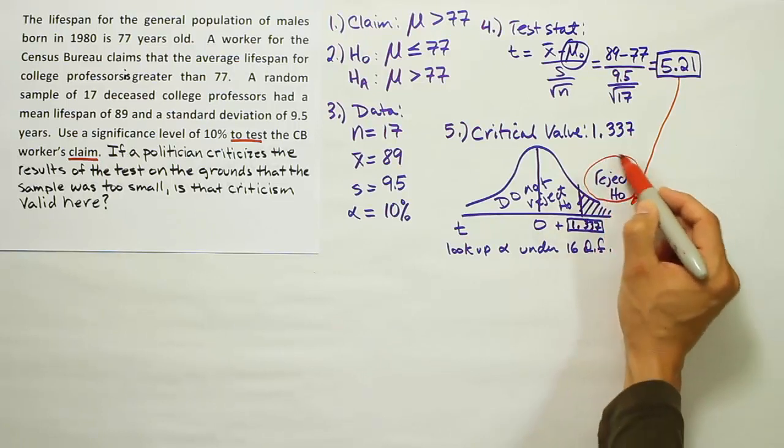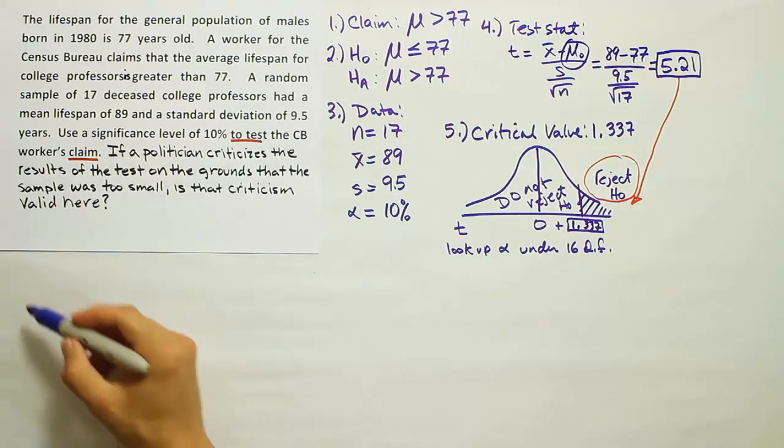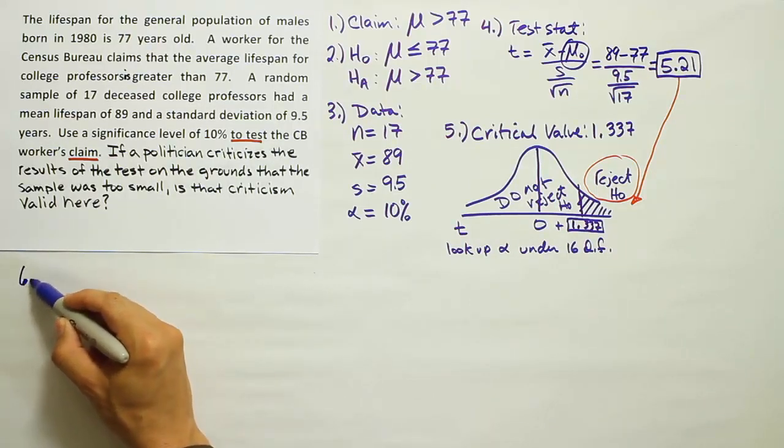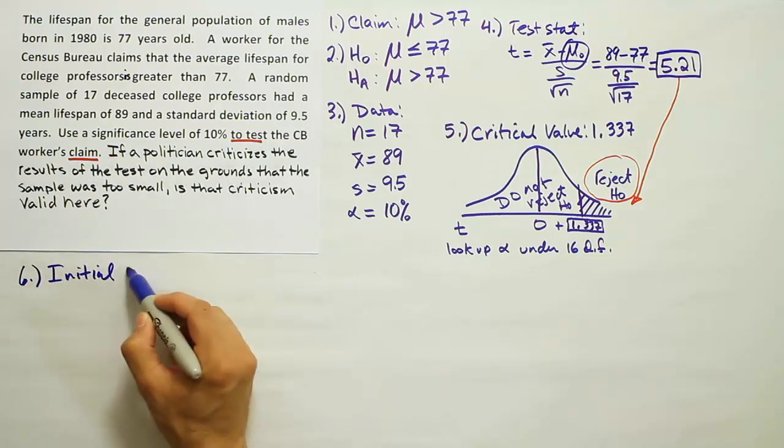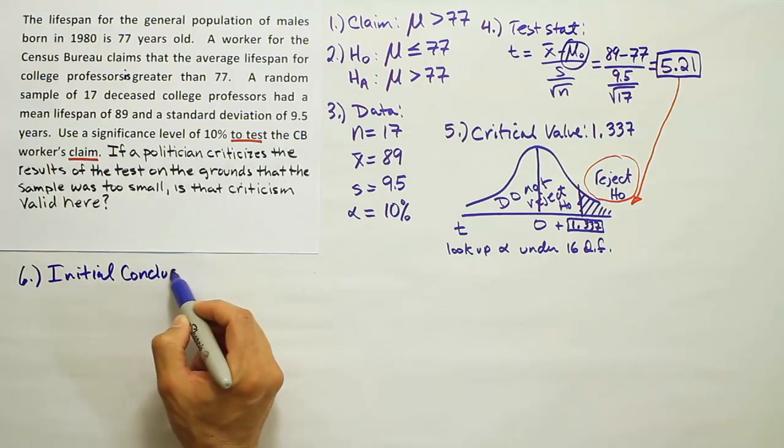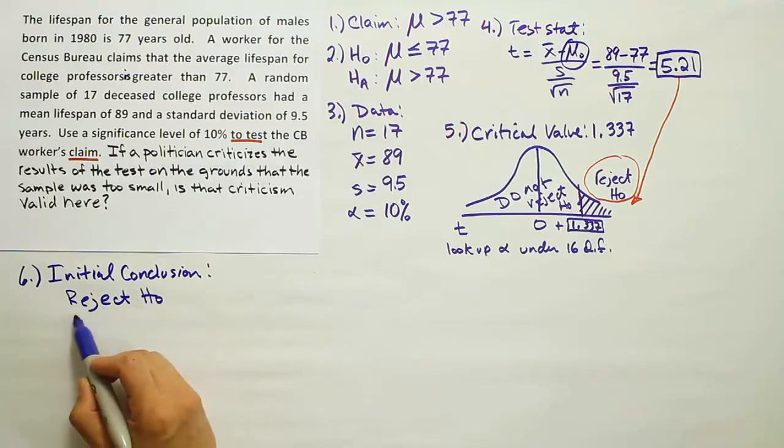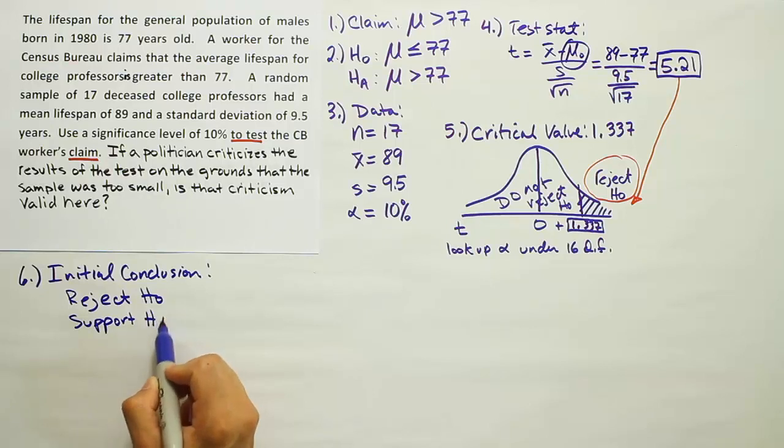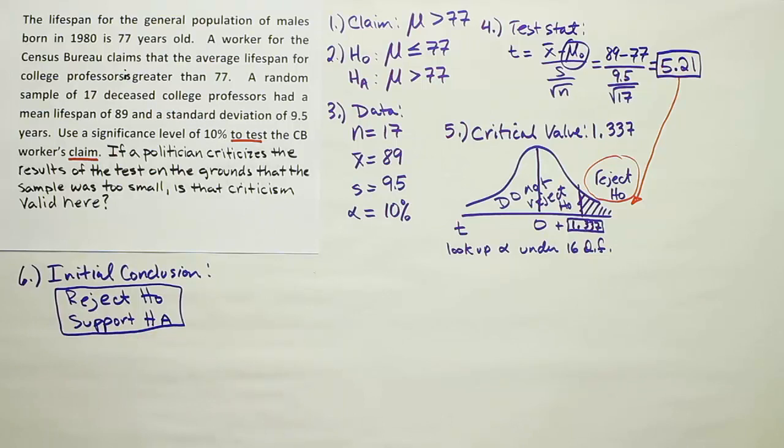That indicates we should reject H0. So we've now formed the basis of our initial conclusion, step 6. That initial conclusion is namely to reject H0 and therefore support HA. Remember, these go hand in hand. If you reject H0, you're supporting HA.